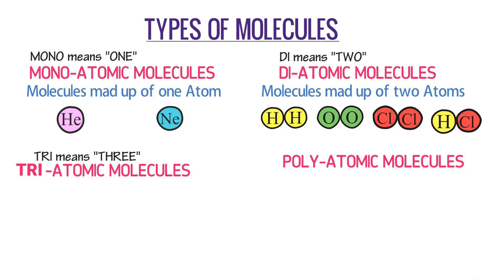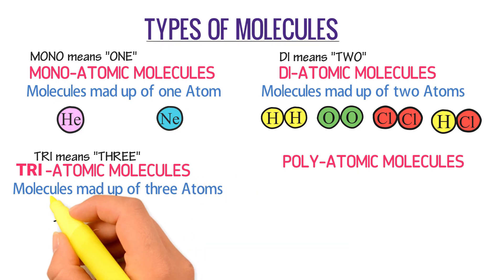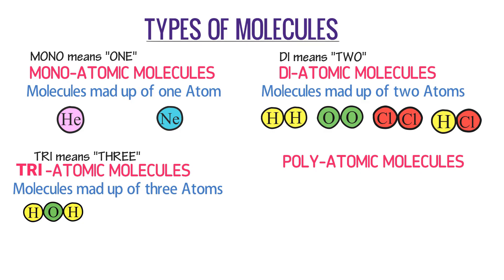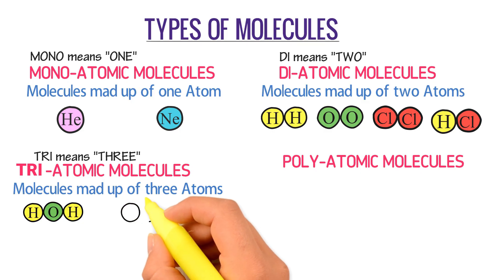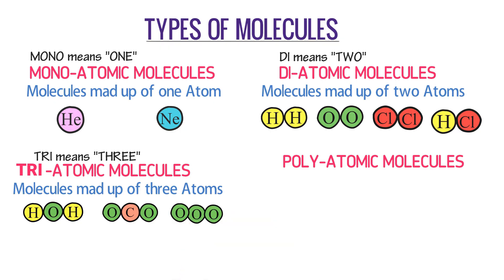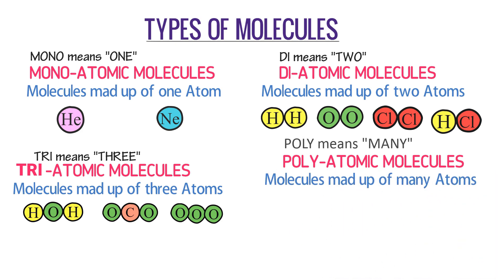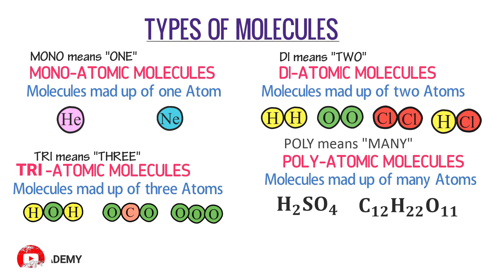The word tri means three — molecules made up of three atoms. For example, water molecule H2O, carbon dioxide CO2, and ozone molecule O3. The word poly means many — molecules made up of many atoms. For example, sulfuric acid H2SO4 and sugar molecule C12H22O11.